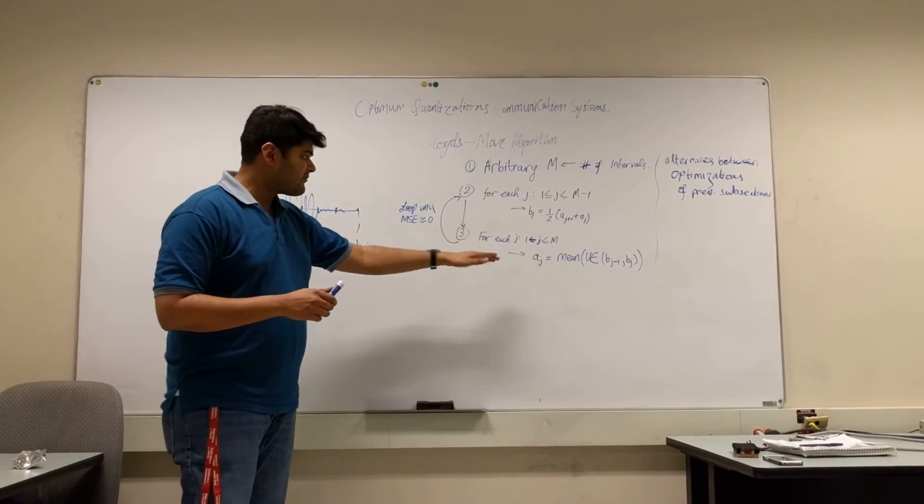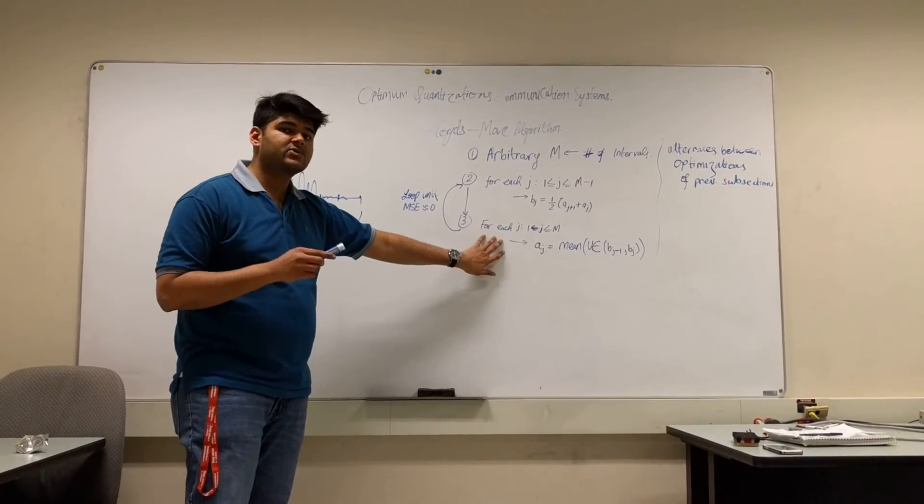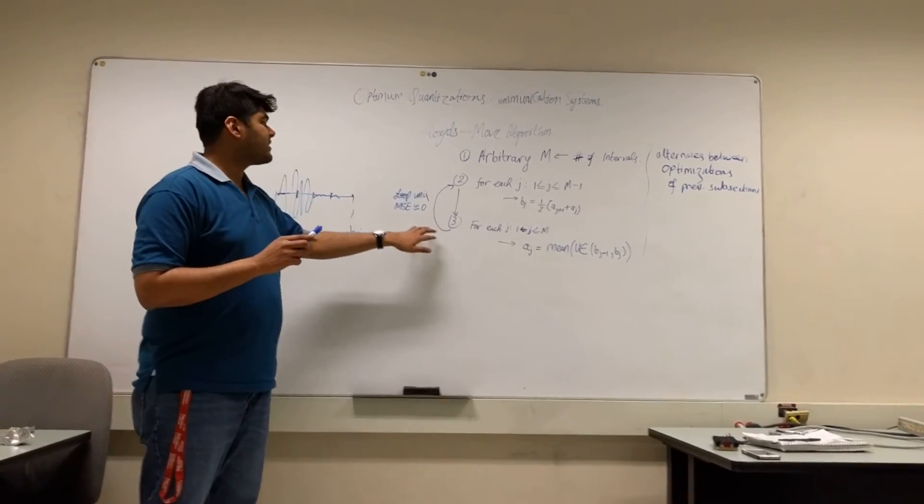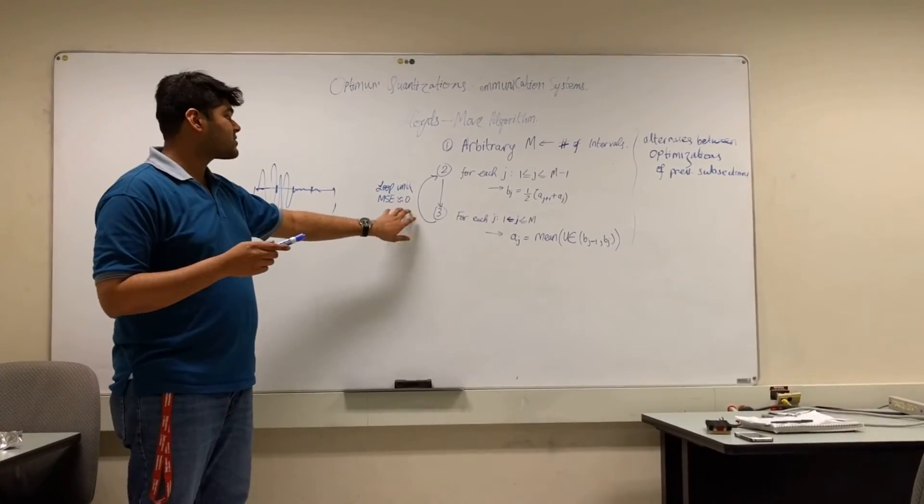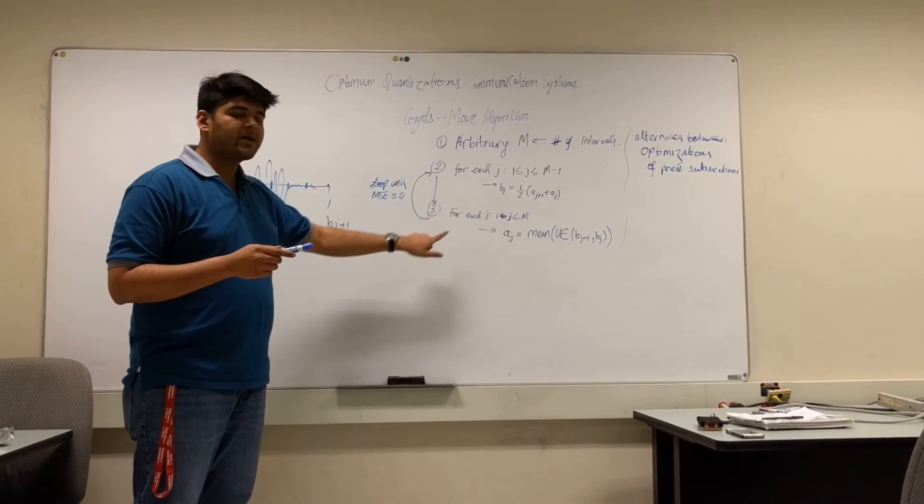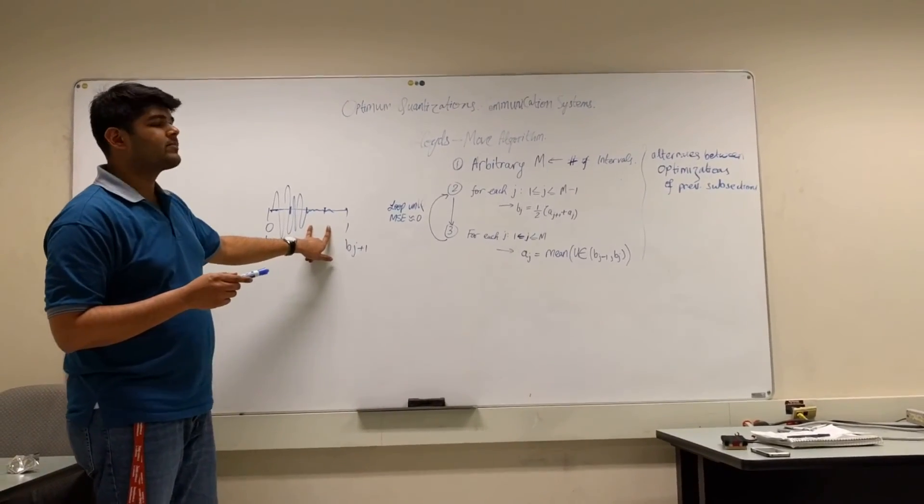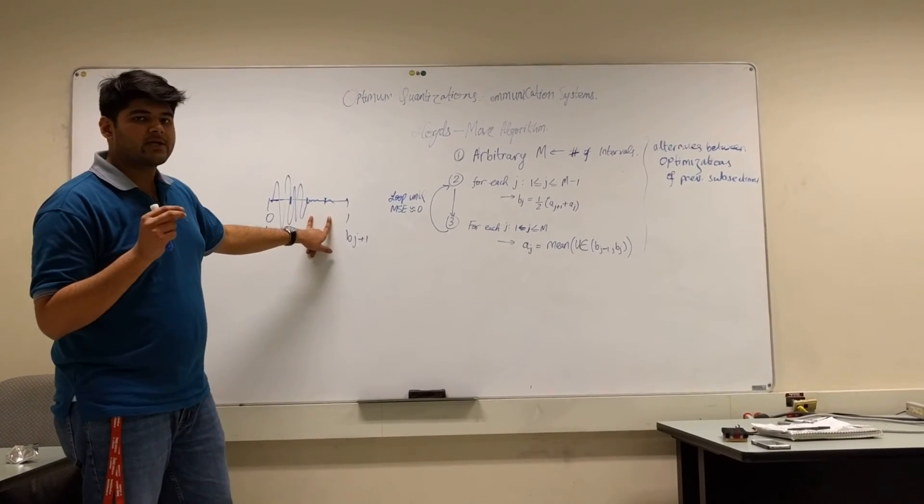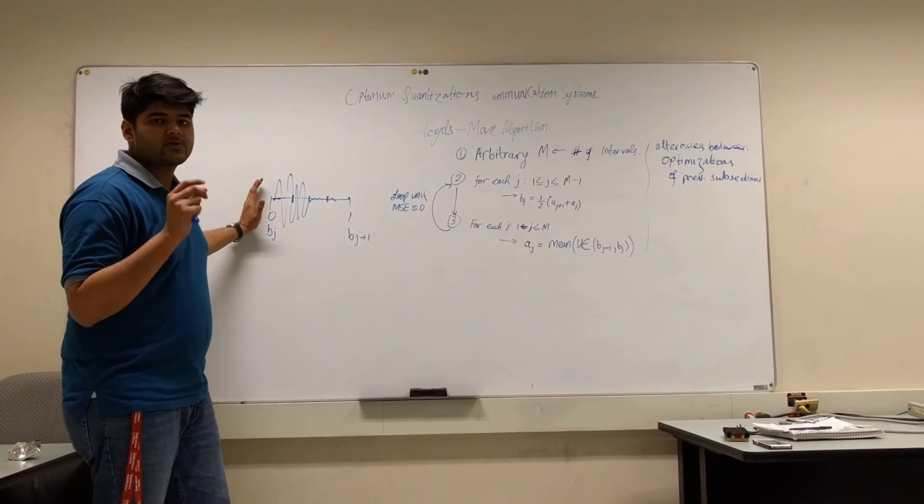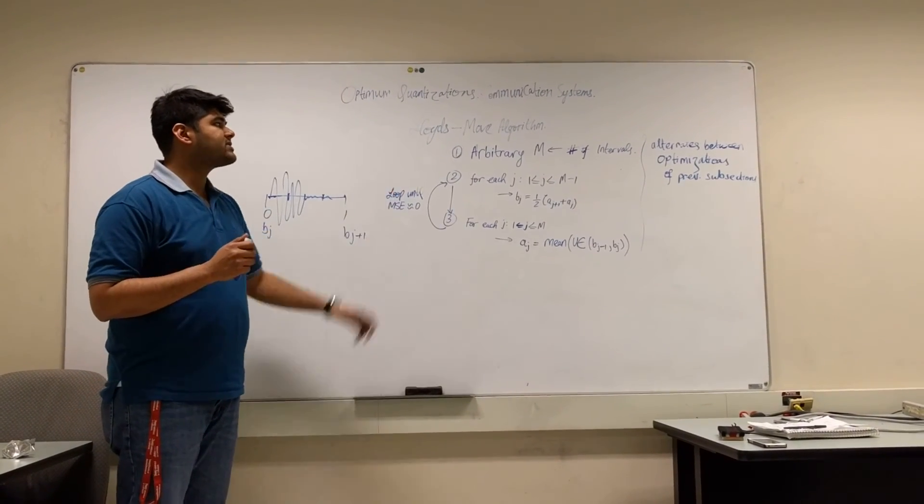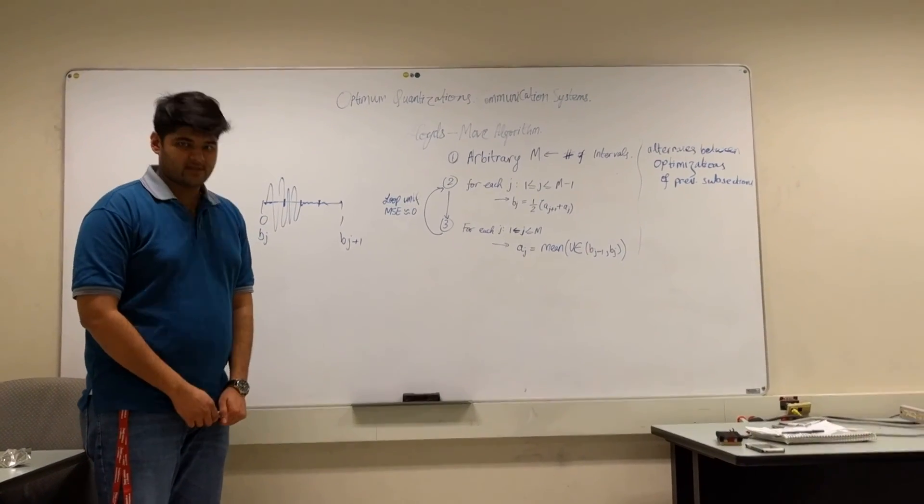Hence, we move on to the third step where we are actually calculating the mean squared error. And until the point it is not negligible or as close to zero, we keep looping over and over again until we actually get the most optimum point within an interval to choose the mean squared error. And that's how the Lloyd's-Max algorithm works. Thank you.